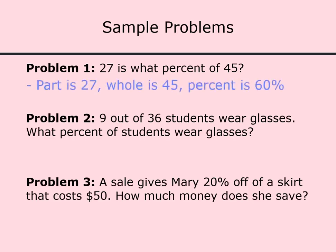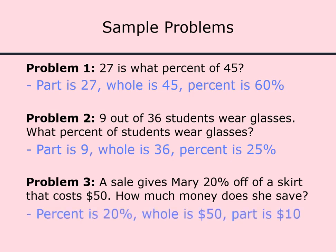For problem 1, the part is 27, the whole is 45, and it asks to find the percent, which is 60. For problem 2, the part is 9, the whole is 36, and it asks to find the percent, which is 25. For problem 3, the percent is 20, the whole is 50, and it asks to find the part, which is 10.